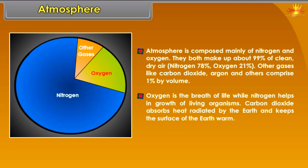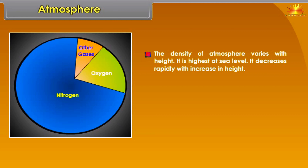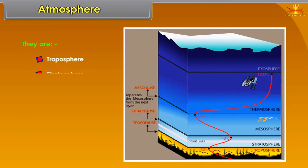Nitrogen makes up 78%, oxygen 21%, and other gases like carbon dioxide and others comprise 1% by volume. Oxygen is the breath of life while nitrogen helps in the growth of living organisms. Carbon dioxide absorbs heat radiated by the earth and keeps the surface warm. The density of atmosphere is highest at sea level and decreases rapidly with increase in height. The atmosphere extends up to a height of about 1,600 km and is divided into five layers: troposphere, stratosphere, mesosphere, thermosphere, and exosphere.